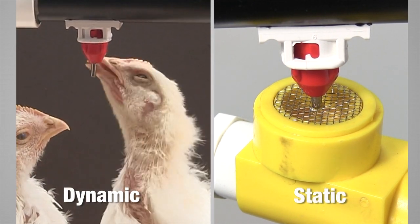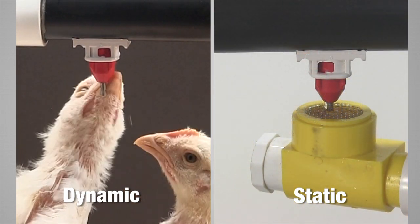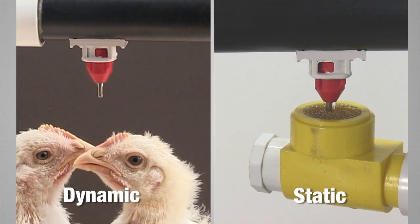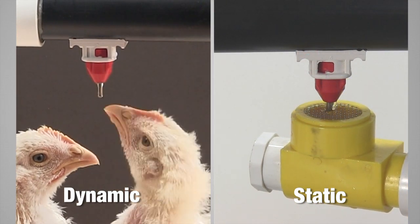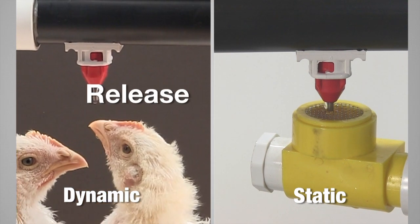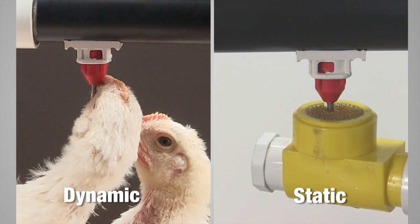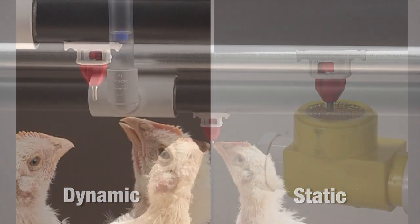Now let's compare this test method to a bird actually drinking. When birds drink, the action is dynamic – peck, release, peck, release – and each peck is different. It is not static.